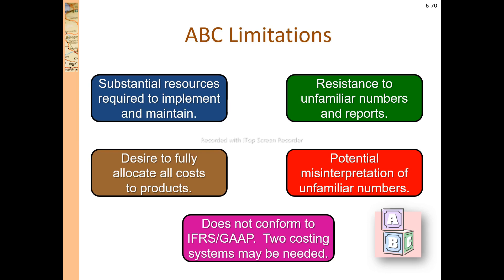There is a limitation of ABC costing for external purpose reporting. Substantial resources are required to implement and maintain it. The ABC costing system is especially more complicated and more automated. The implementation and design of ABC costing is very costly. ABC costing desires to fully allocate all costs to the product, but product costs are not always easily allocated. More dedication and more ways of allocation are needed.